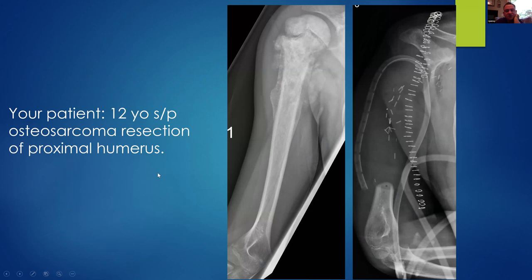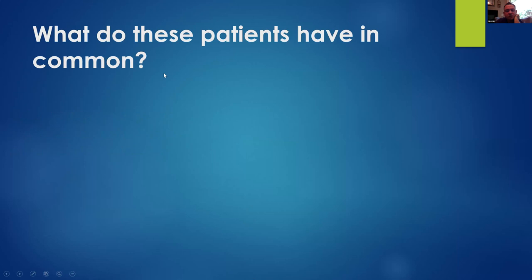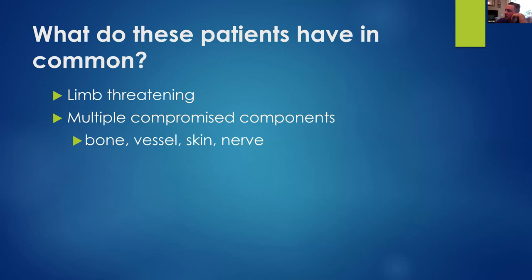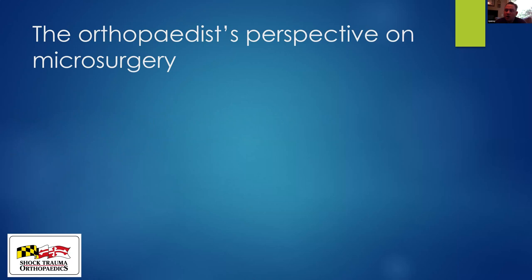A case just presented about three months ago to my service: a 12-year-old who has an osteosarcoma requiring significant resection of the proximal humerus. What do these patients have in common? It's pretty obvious that all of these injuries are limb threatening. It's also obvious that multiple components are involved — bone, vessel, skin, and nerve — all of which will require some form of reconstruction potentially. These surgeries are complex, time-consuming, and life-altering, requiring an integrated approach between the orthopedic surgeon and the microsurgeon/plastic surgeon.